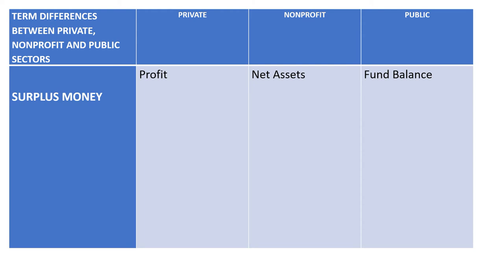When talking about surplus money — this is a slide I added that wasn't in the art of accountancy lecture, so you may want to add it to your table. Surplus money is when your assets are greater than your liabilities. That's called profit in the private sector, still called net assets in the nonprofit sector, and a positive fund balance in the public sector.